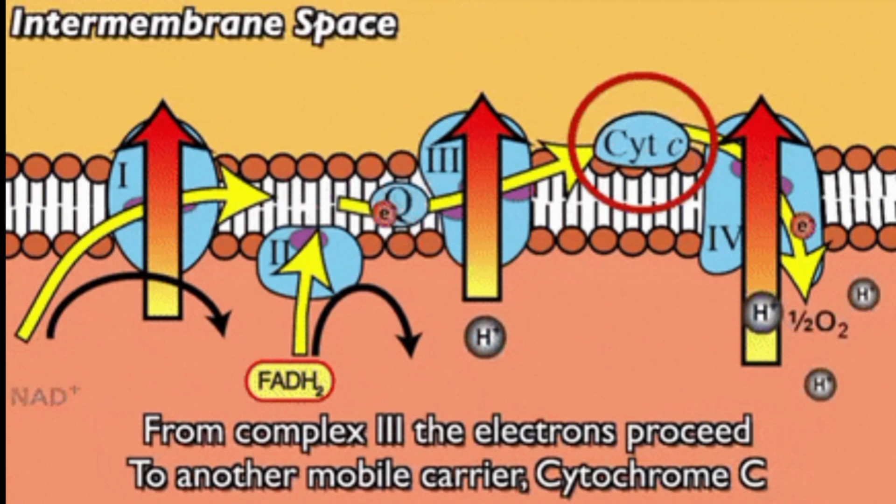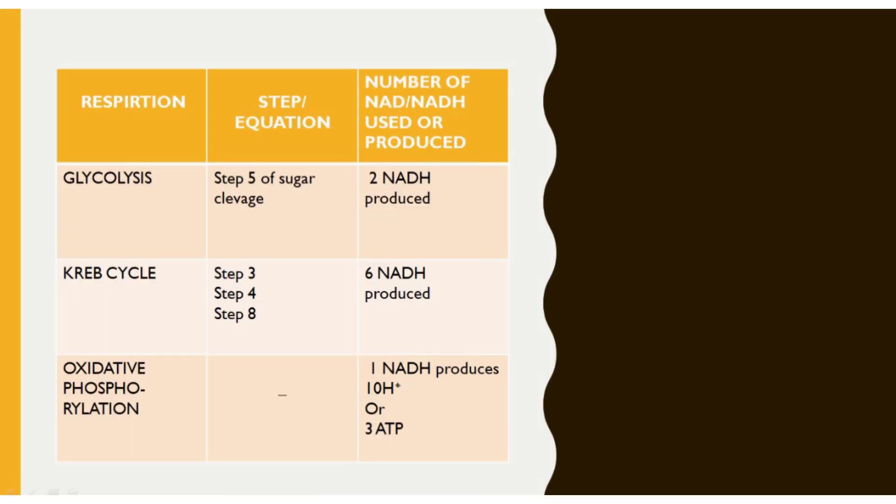Oxidative phosphorylation marks the end of cellular respiration. You can see an overview of cellular respiration in the form of a table showing each step associated with the production of NADH. In glycolysis during sugar cleavage, 2 NADH are produced. In the Krebs cycle at steps 3, 4, and 8, 6 NADH molecules are produced collectively. In oxidative phosphorylation, 1 NADH produces 10 protons and those 10 protons pump 3 ATP.